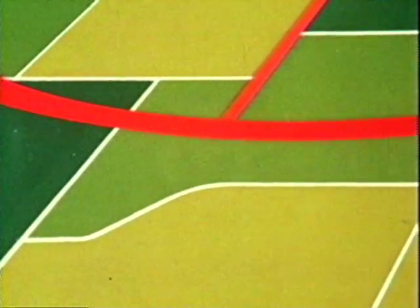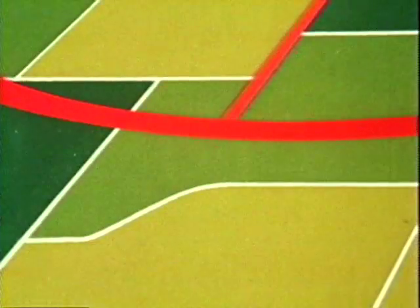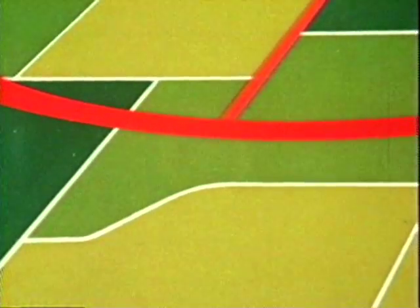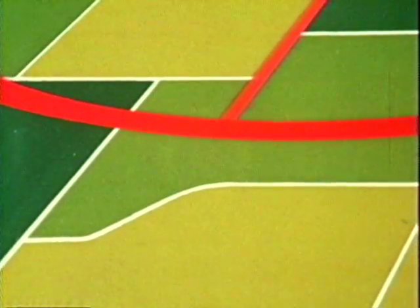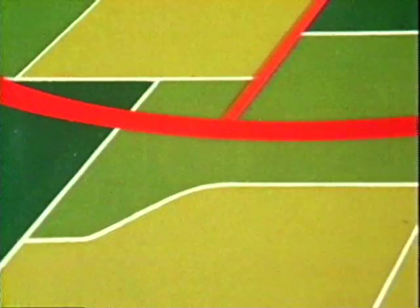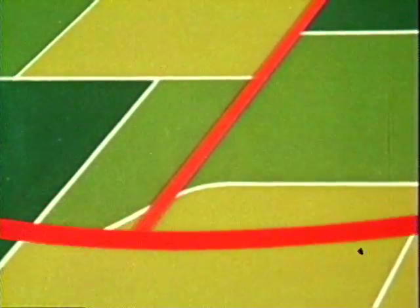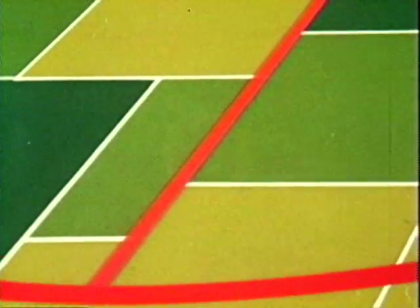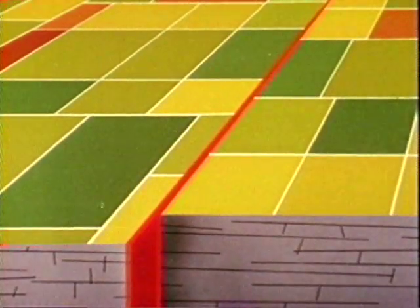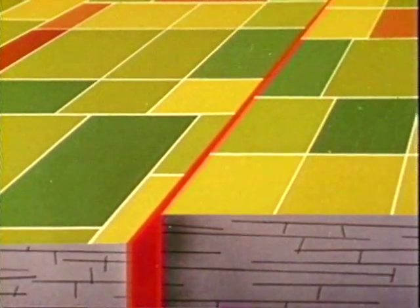Near the fault, this movement can cause damage to buildings. The sudden movement also causes vibrations to travel out in all directions. These vibrations are called seismic waves.